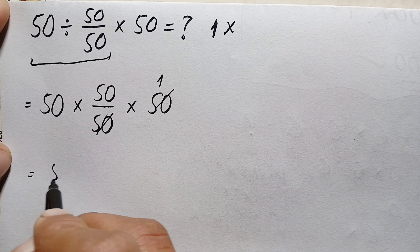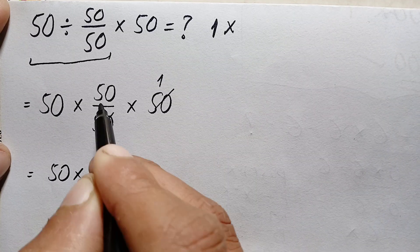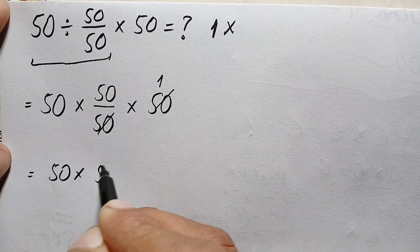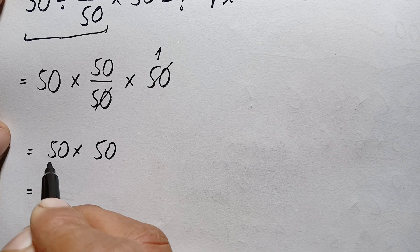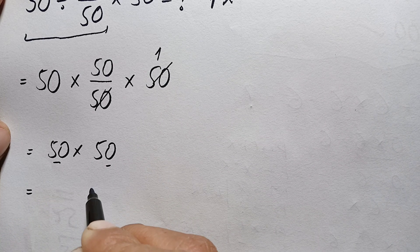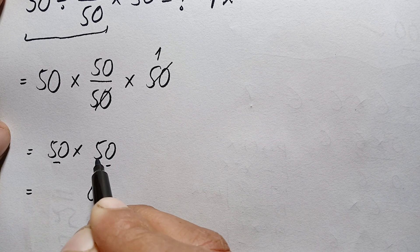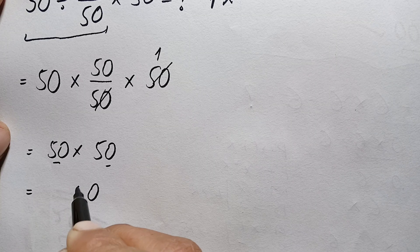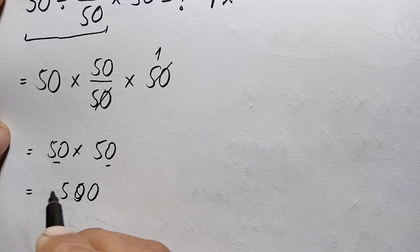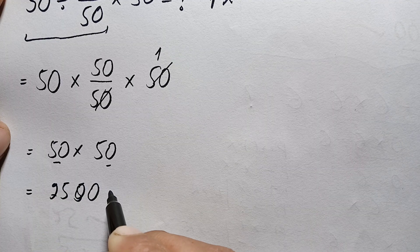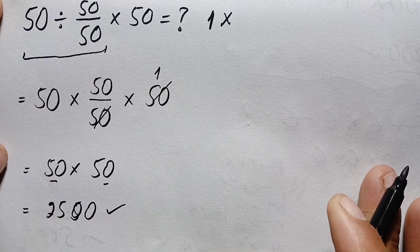So this will become 50 times 50. And finally, 50 times 50 is simply: 50 times 0 is 0, 50 times 5 is... 5 times 0 is 0, and 5 times 5 is 25. This gives us 2500, and finally this is our correct answer.